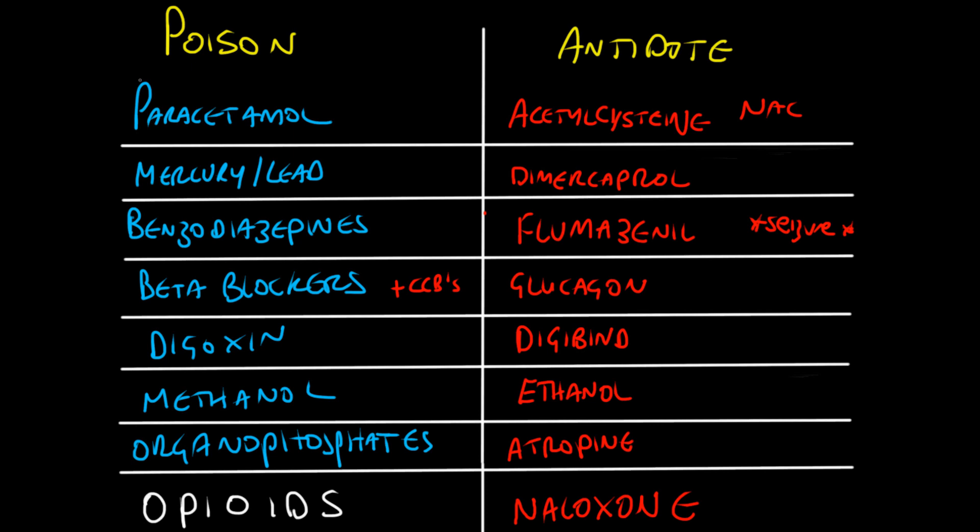These are the main poisons and treatments you need to know for finals. The key ones are N-acetylcysteine — including the nomogram in the BNF for prescribing it — flumazenil, ethanol for methanol poisoning, atropine and how it works, and naloxone as the reversal agent for opioids. Naloxone is by far the most common antidote you'll be using in hospital, potentially on a daily basis depending on where you work.